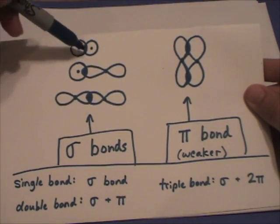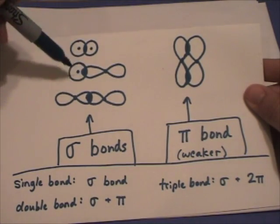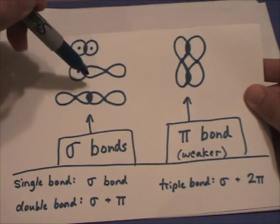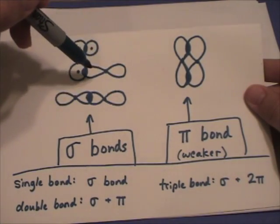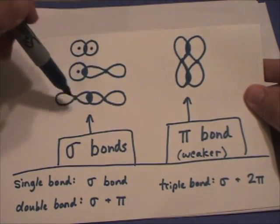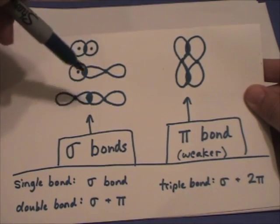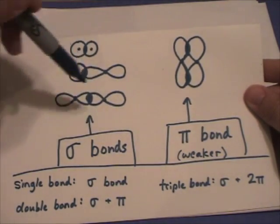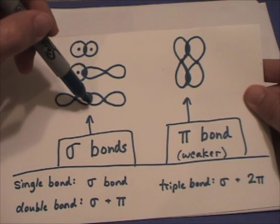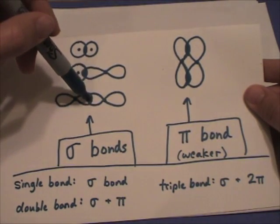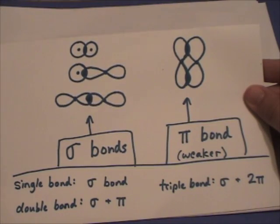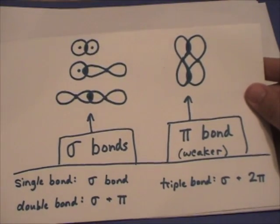So you could take two p orbitals and have this overlap to form a pi bond. Sigma bonds could form between two s orbitals, an s orbital and a p orbital, or this could be a hybridized orbital, two sp hybridized, or two p orbitals. However it works out, just a sigma bond occurs when the electron overlap is between the nuclei of the atoms.